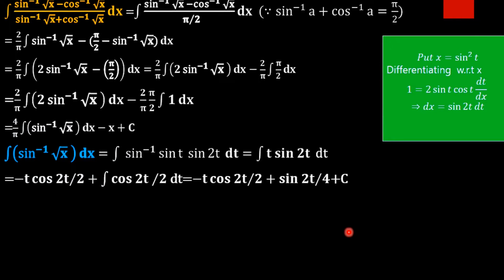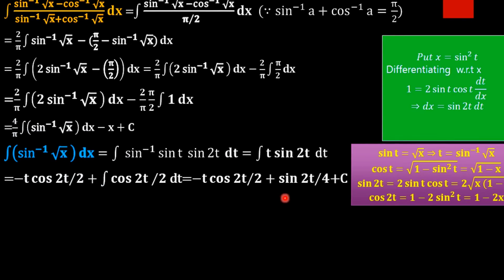Next, we back-substitute to express everything in terms of x. Since sin t equals root x, we have t equals sin inverse of root x. We also need cos 2t and sin 2t in terms of x.